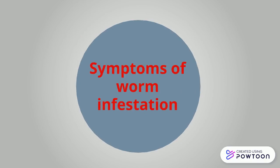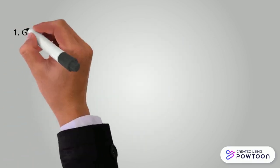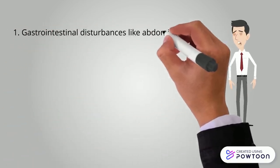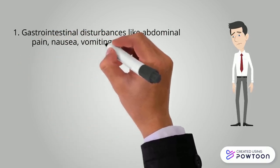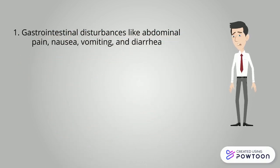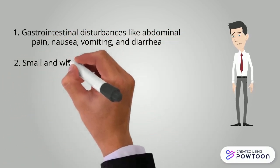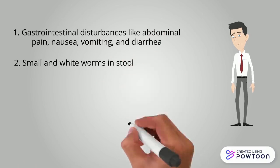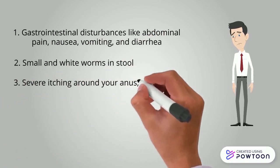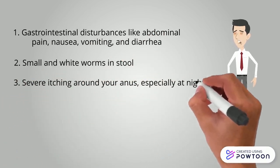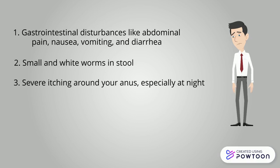When you or your children are exposed to worm infestation, you may have certain symptoms: gastrointestinal disturbance like abdominal pain, nausea, vomiting, and diarrhea. You may see small white worms in your stool. Itching around your anus, especially at night, is an important sign of worm infestation.